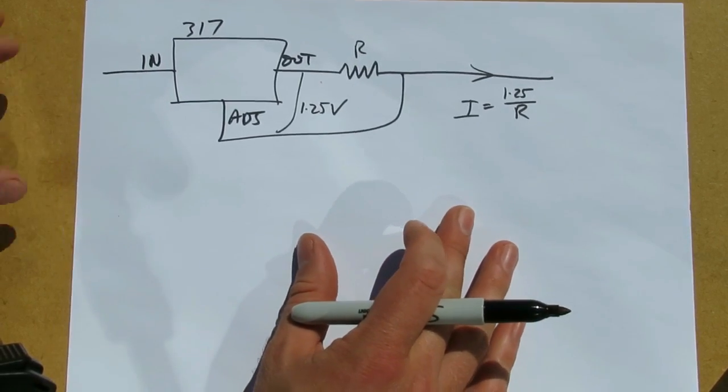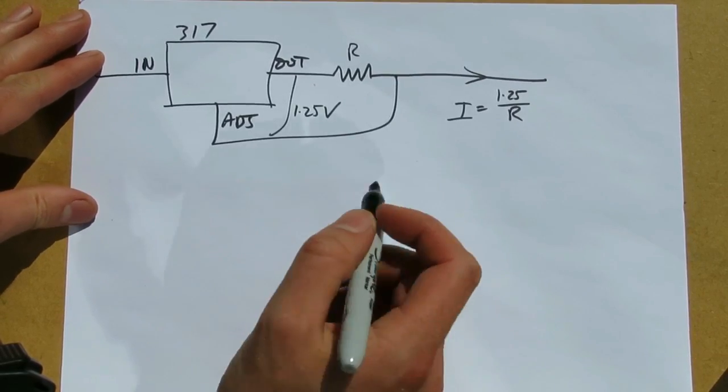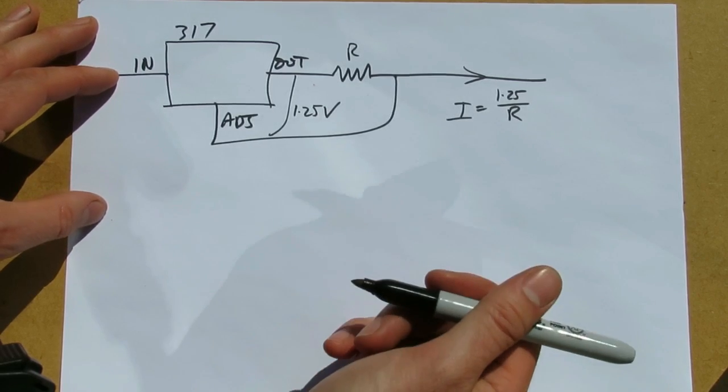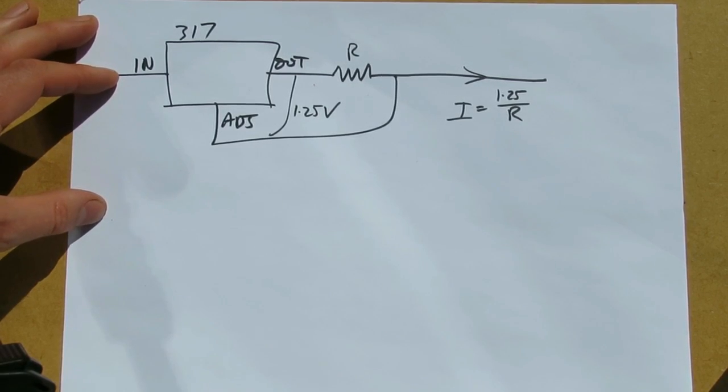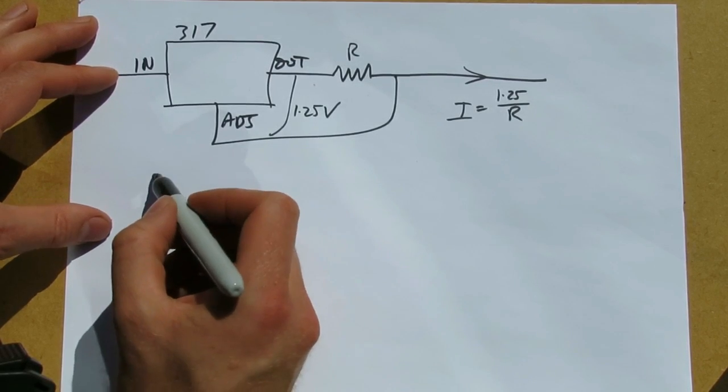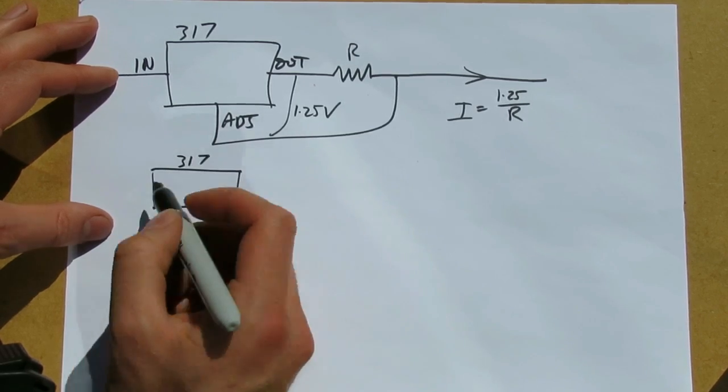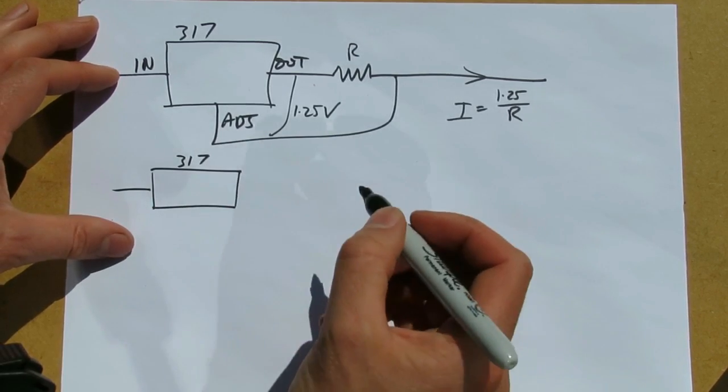Now, the more useful variant of this is an adjustable constant current source, which is what's described on the web page. Again, we've got our 317. I'll draw this slightly smaller so I can try and fit it all in.